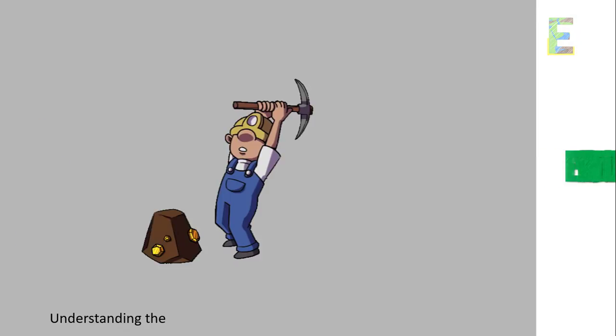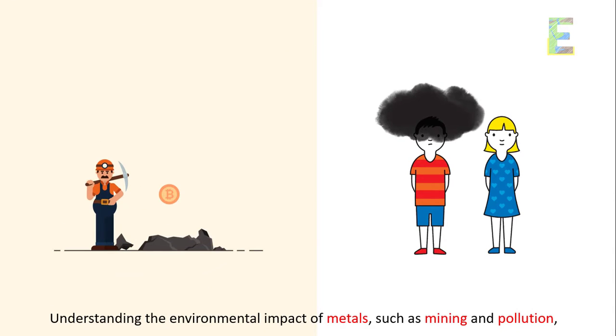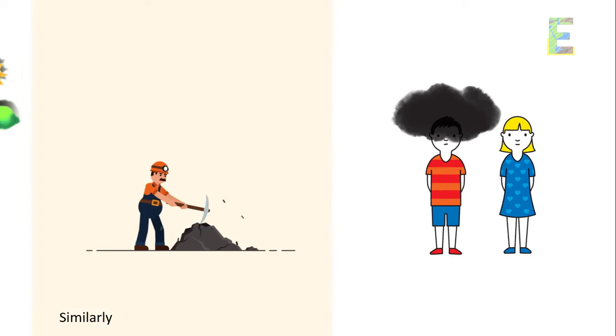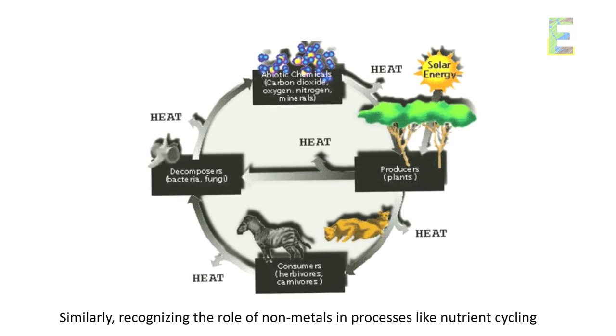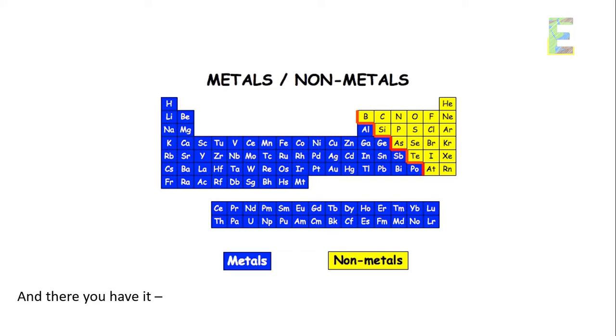Environmental impact. Understanding the environmental impact of metals, such as mining and pollution, is essential for sustainable practices. Similarly, recognizing the role of non-metals in processes like nutrient cycling helps us protect our ecosystems.